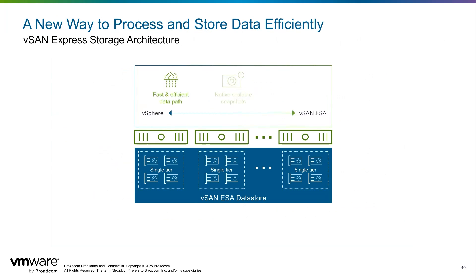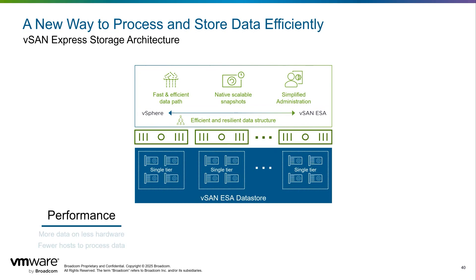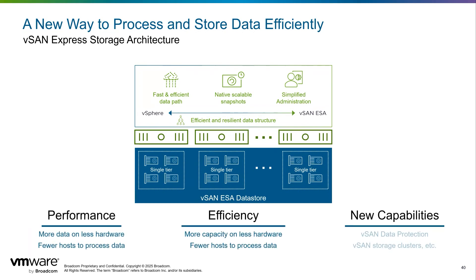What really makes vSAN Express Storage Architecture so unique? It provides a new way for vSAN to process and store data in a fast and efficient way. The new fast and efficient data path is paired with a new resilient data structure that gives users the ability to store and access data quickly. It also provides new capabilities like a brand-new snapshot engine that delivers tremendous levels of performance and scalability never seen before. vSAN ESA also makes administering an environment much easier, removing challenges that existed in the original storage architecture. Using vSAN ESA is part of the hypervisor you already know.